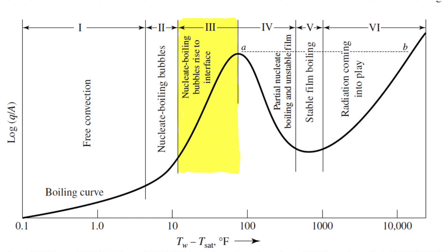Regimen 3 is characterized by nucleate boiling and bubbles rising to the surface. In this regimen, bubbles form on the heated surface and then rise to the water-air interface. This stage occurs between delta T values of 100 to 50 degrees Fahrenheit. Because the rising bubbles leave and cause more vigorous convection, this is the regimen where we see the best heat flux.